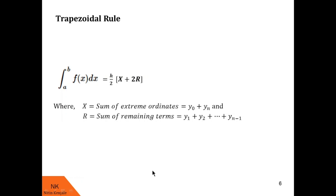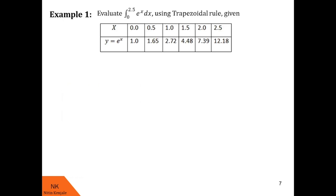Here h is the partition size of the interval a to b. Now let us see examples on this. In this first example, we are asked to evaluate the integral of e^x dx over the limit 0 to 2.5 using the trapezoidal rule, given this table.